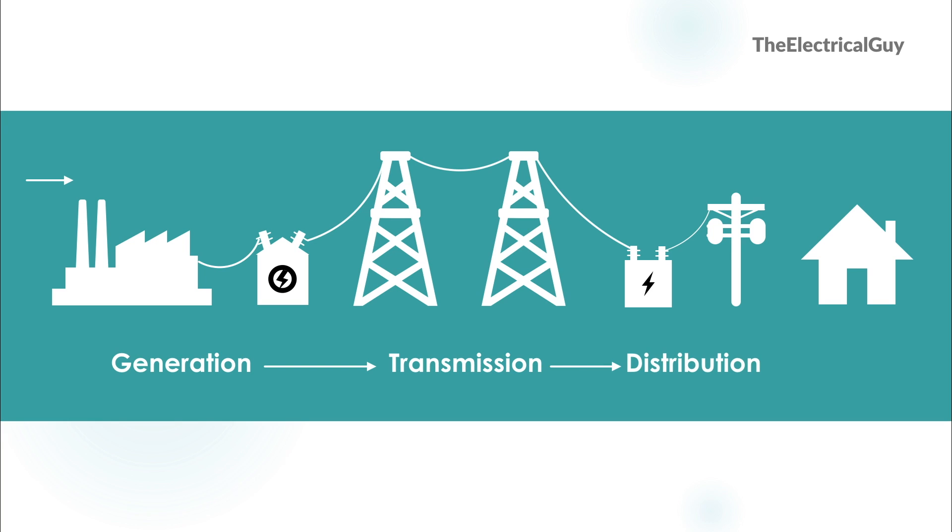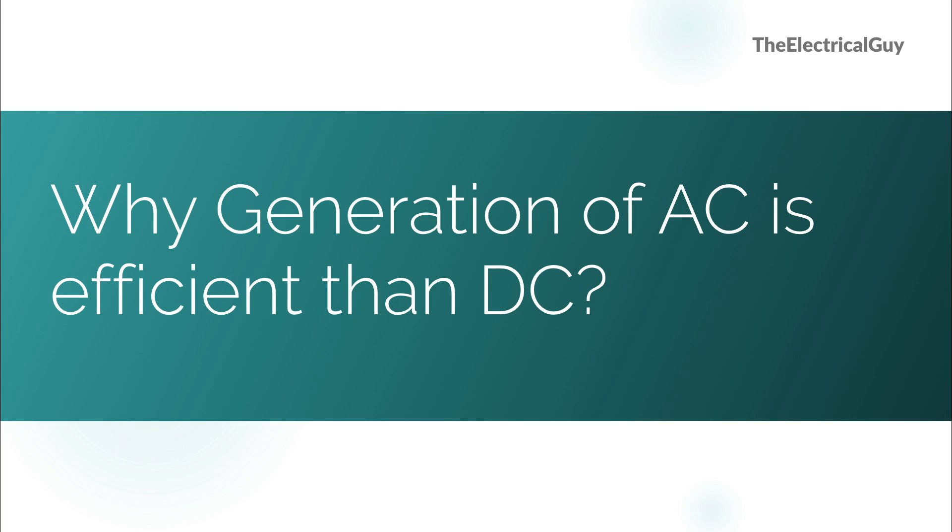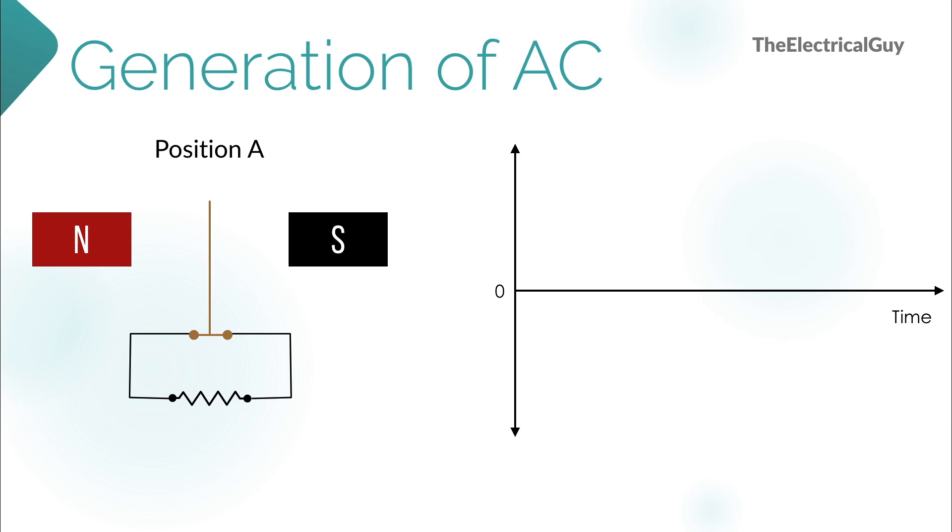DC is also sometimes used for power transmission but it is not that efficient. Now the question is why is this so? Why is AC more efficient than DC? First let's look at why generation of AC is more efficient than DC. Let's first try to generate the AC.